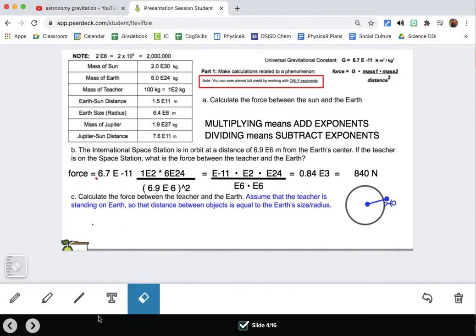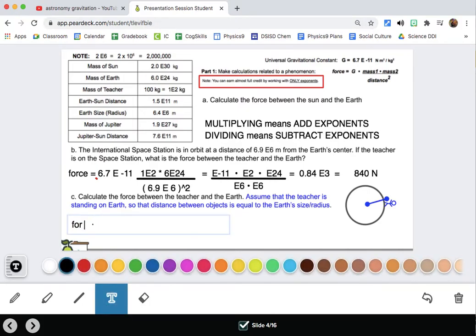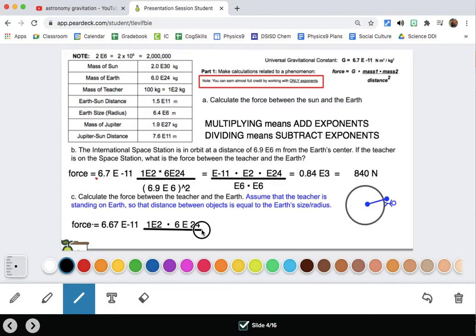The distance from the center to the outside of the earth is basically how far apart these objects are center to center. Let's do our calculation. Force equals 6.67 e negative 11 times, mass of the teacher is the same. Mass of the teacher is 1e2, times mass of the earth, still also the same, 6e24. And then, what's changed? Well, the distance between them has definitely changed. We have to use the radius of the earth this time, so let's try that. Earth's size, 6.4 e6.